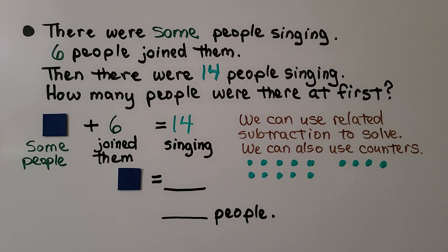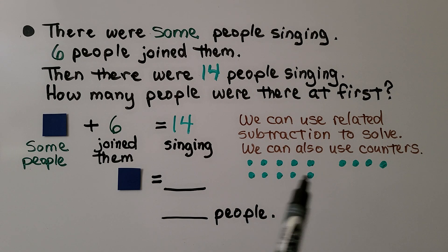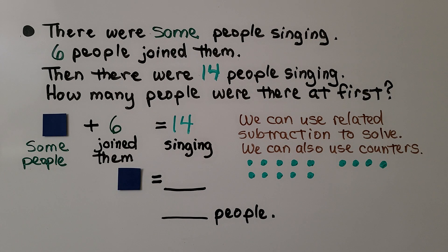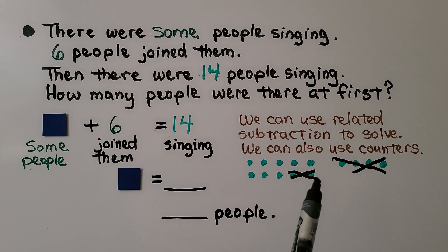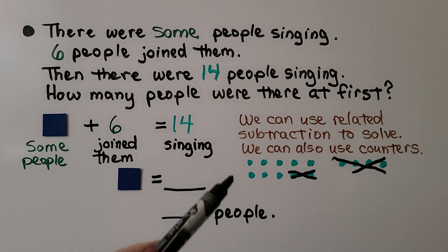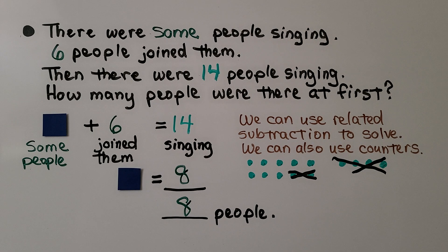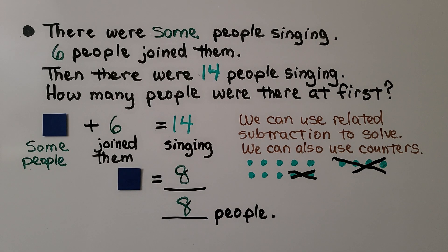We could also use counters. We can make 14 counters and take six of them away by crossing them out. We cross off four, five, six — that's going to leave eight. That means there were eight people there at first. The square represents the number eight.